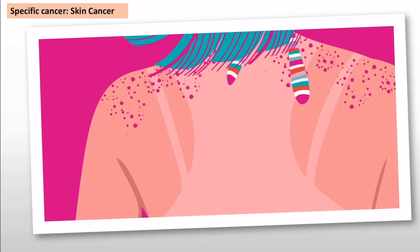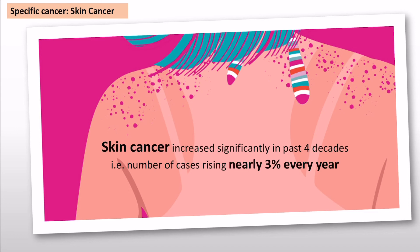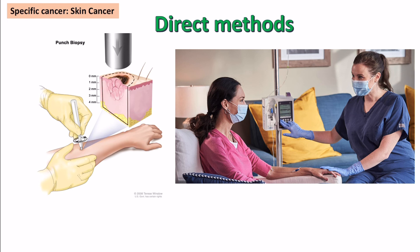Looking specifically at skin cancer, which has increased significantly — nearly 3% every year in terms of new cases — the government uses direct methods including surgery to remove the cancer and chemotherapy, where medicine is administered intravenously to directly target and remove the cancer.